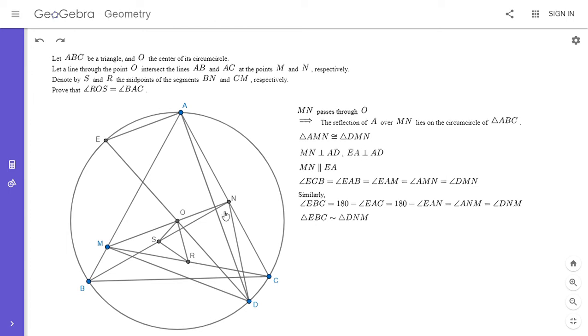And then B corresponds to N, and the midpoint of BN is S. Similarly, C corresponds to point M, and R is the midpoint of CM. So we're good to go to apply the gliding principle.